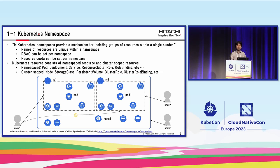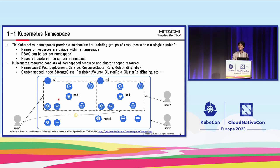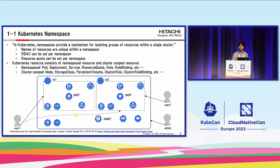The first concept is namespace. In Kubernetes, namespaces provide a mechanism for isolating groups of resources within a single cluster. For example, as described in the diagram, resources with the same name, like pod1, can be created by multiple users if the namespaces are different, like NS1 and NS2. And if RBAC is set properly, we can make it so that only user1 can access pod1 in NS1 to prevent other users, like user2, from accessing that pod.